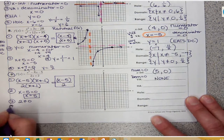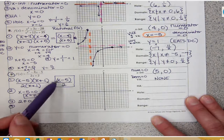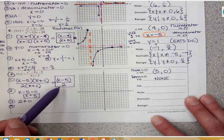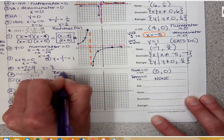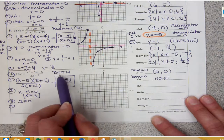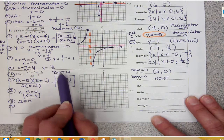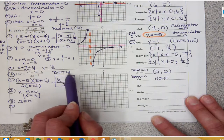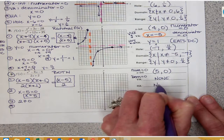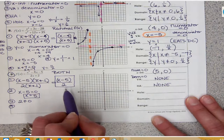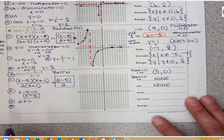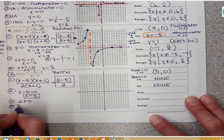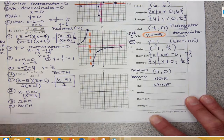For the horizontal asymptote, bigger on top means no asymptote. The degree of the numerator is 1, and there's no variable in the denominator, so the denominator has no degree. Since it doesn't have a degree, it doesn't count. So we have none for the horizontal asymptote — because the numerator's degree is bigger on top.